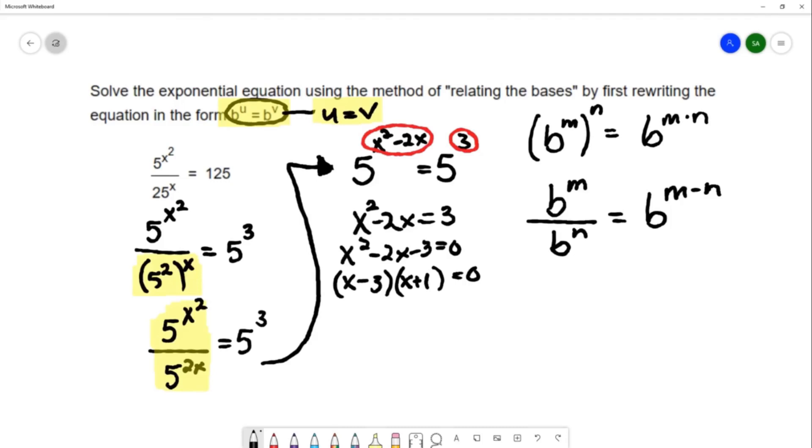Once I get it factored, I'm going to set each factor equal to 0 and solve. That gives x equals 3 and x equals negative 1. So these are the solutions to the exponential equation: x equals 3 and negative 1.